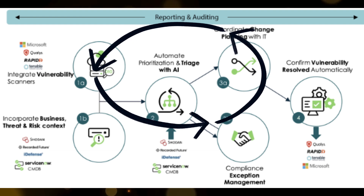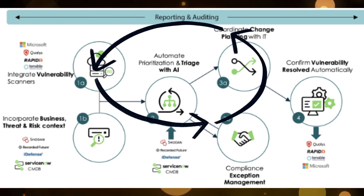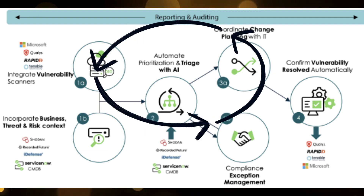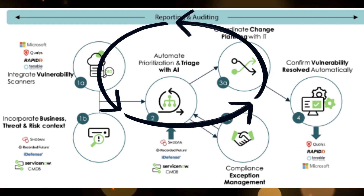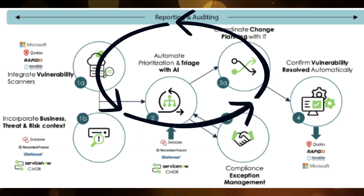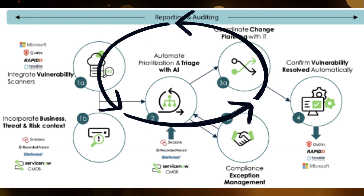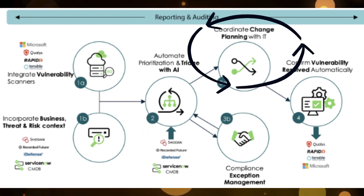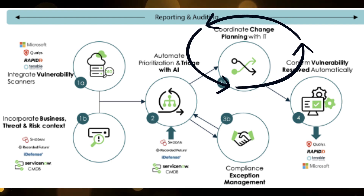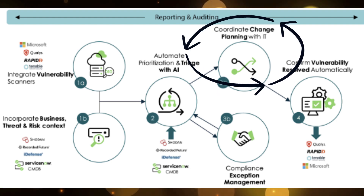All the automation tools use your ServiceNow CMDB — the configuration management database — which is really important for triaging, prioritizing, and even automatic assignment to the owners. You can also coordinate change planning with IT. The operational team can work on that, and if any change requests or change management activities need to be done, those will be automatically identified and change requests will be created.